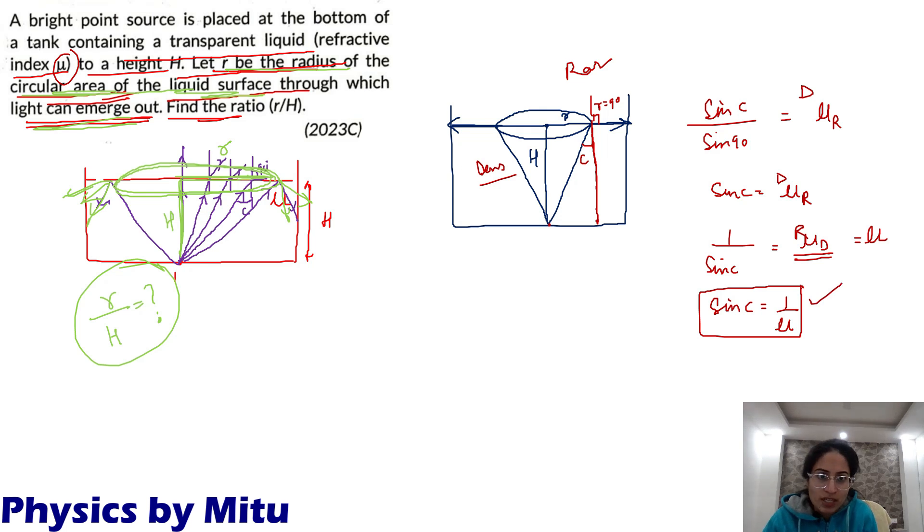Now we have to find r by h. This is r, so this will be r. And this is also h. This is 90 because it's normal. Now in this triangle, we can use tan C to get r by h. r by h equals tan C. But C is not given in the question, so we have to convert. In the question mu is given, so we need it in terms of mu. So we use the triangle method. This is C, this is perpendicular hypotenuse. This will be square root of mu square minus 1. So tan C is 1 by square root of mu square minus 1, which equals r by h. This is your answer.